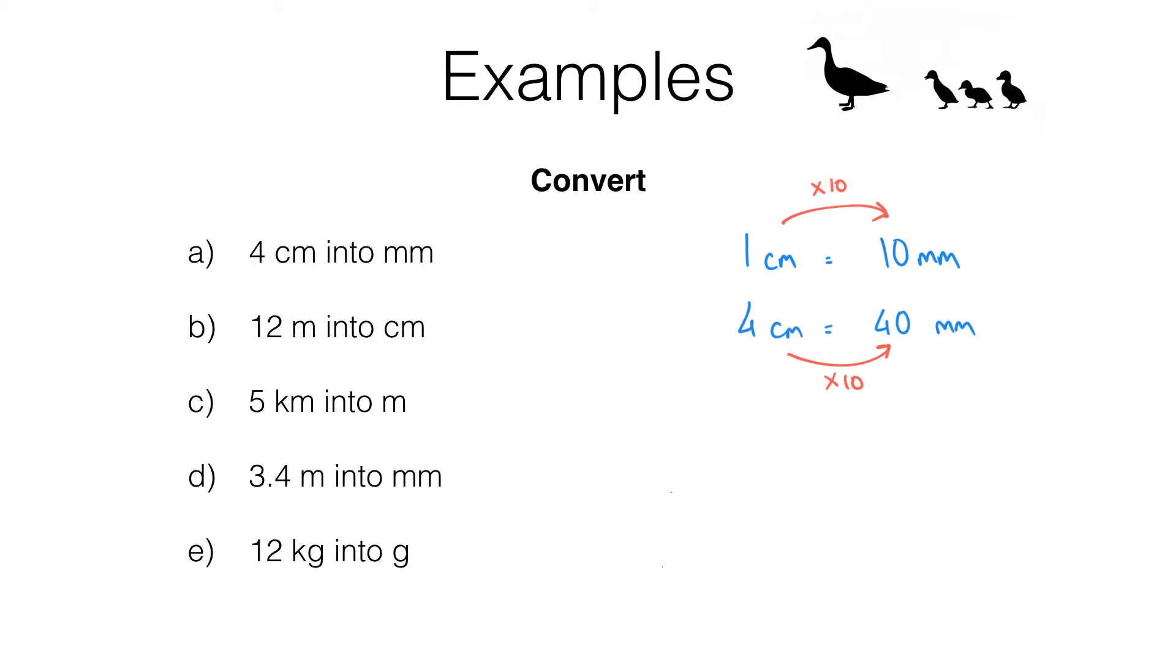Here is a different way of thinking about it. We could work downwards. 4 centimeters is 4 lots of 1 centimeter. So our answer here must be 4 lots of 10 millimeters and if you do 10 times 4 you get 40. We get the same answer we got before.